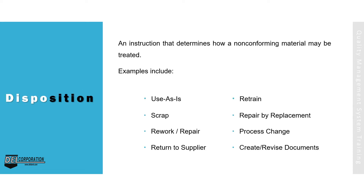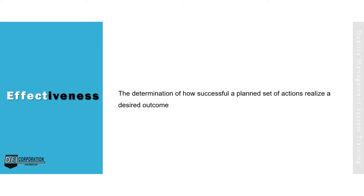Disposition is an instruction that determines how non-conforming material is handled. Examples include use as is, scrap, rework, repair, return to supplier, retrain, repair by replacement, process change, create or revise documents. Effectiveness is the determination of how successful a planned set of actions realize a desired outcome.